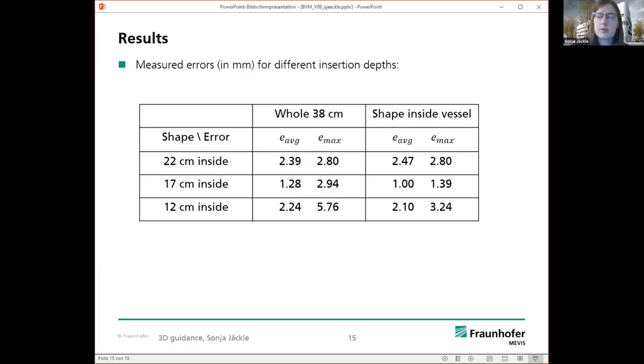What's about the error inside the vessel? This is the most interesting part for the surgeons. And here we have even less errors, so we have an average error from 1 up to 2 millimeters, and maximum error from around 2 or 3 millimeters.